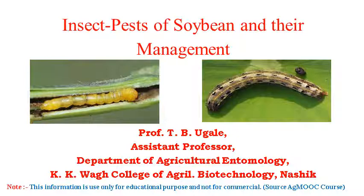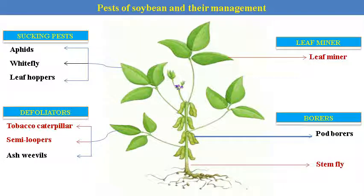Soybean is a very important oil seed crop in Maharashtra. Pests of soybean are in four complexes. It is a major contributor to economic loss — the pod-feeding caterpillar complex: Spodoptera, Semilooper, and Ashwebbill. Other minor pests include the leaf miner, which mines the epidermis and damages the plant heavily. There are also some borers, water borers, and stem fly. Another pest is the stem girdle, which damages the plants.